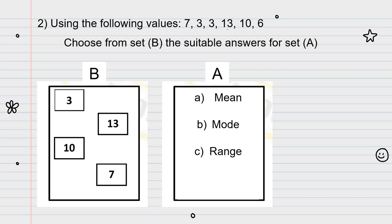How can I find the mean of some values? These values are 7, 3, 3, 13, 10, and 6. And we agreed that the mean equals, let's remember, mean equals the sum of all values over the number of these values. The sum of all values means when I add all of them together. Let's add all of them together. 7 plus 3 plus 3 plus 13 plus 10 plus 6.